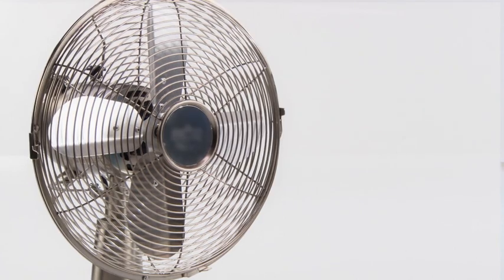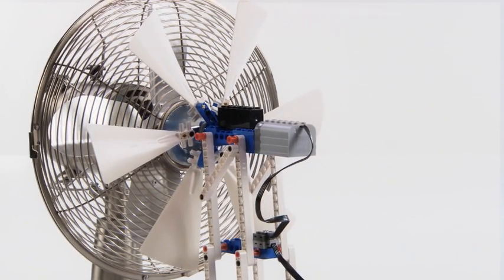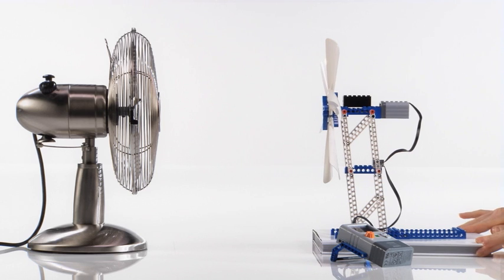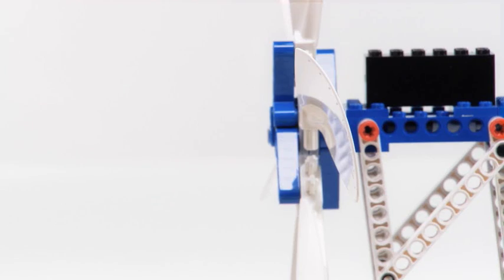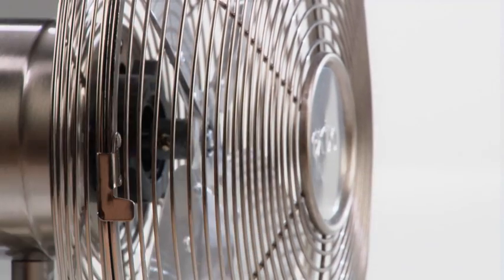Align the center of the fan to the center of the wind turbine. You can use books for this. In our activity pack, we suggest a distance between the fan and the turbine of 30 centimeters, about 12 inches.